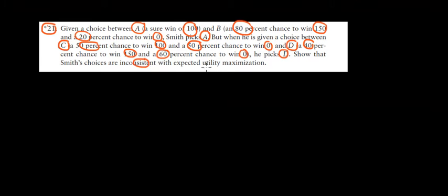Show that we are inconsistent with expected utility maximization. So how do we show that? First of all, let's see what are the expected values here and what are the choices.